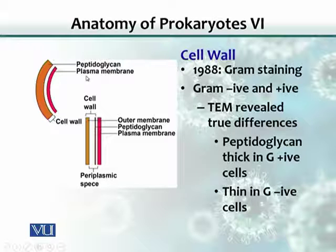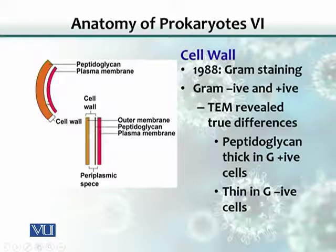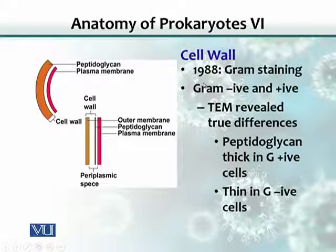We now know that in Gram-positive bacteria, the cell wall is very thick — significantly thicker compared to that of a Gram-negative bacterium. Here you can see a Gram-negative cell wall compared with a Gram-positive cell wall. This structural difference was basically what created the unique behavior observed in Gram staining.